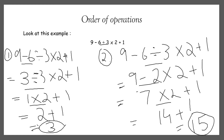So which answer is right — 3 or 15? We cannot tell which one is right. To avoid this confusion, there should be a proper rule which we should follow. It is very important to carry out the four operations in the correct order. So let's study about that rule now.